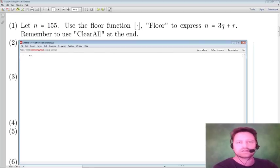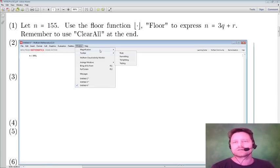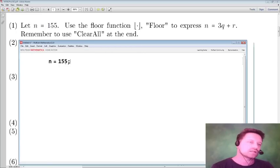set n equals 155 semicolon so that I don't show the output. Now I want this to be a little bit bigger, so I'll increase the magnification all the way up to 300% so hopefully we can all see this.